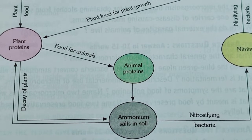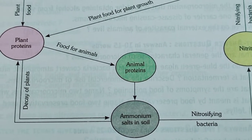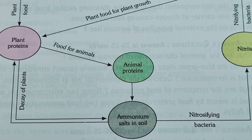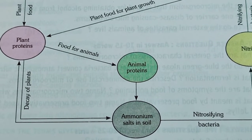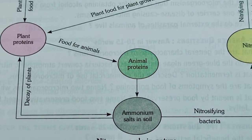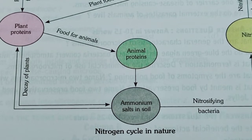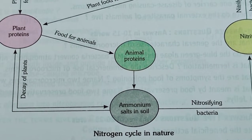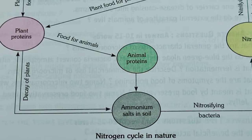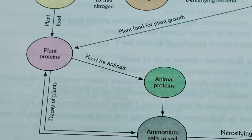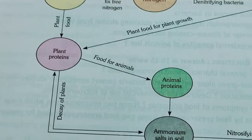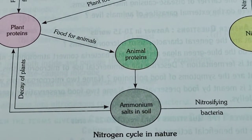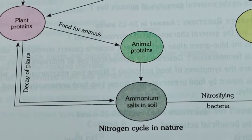The constant flow of nitrogen in the atmosphere through nitrogen fixation and the process of denitrification is overall known as the nitrogen cycle. The nitrogen cycle in nature is very important because nitrogen is the major component of protein — both plant protein and animal protein — and protein is the building block and body-building nutrient for our body.